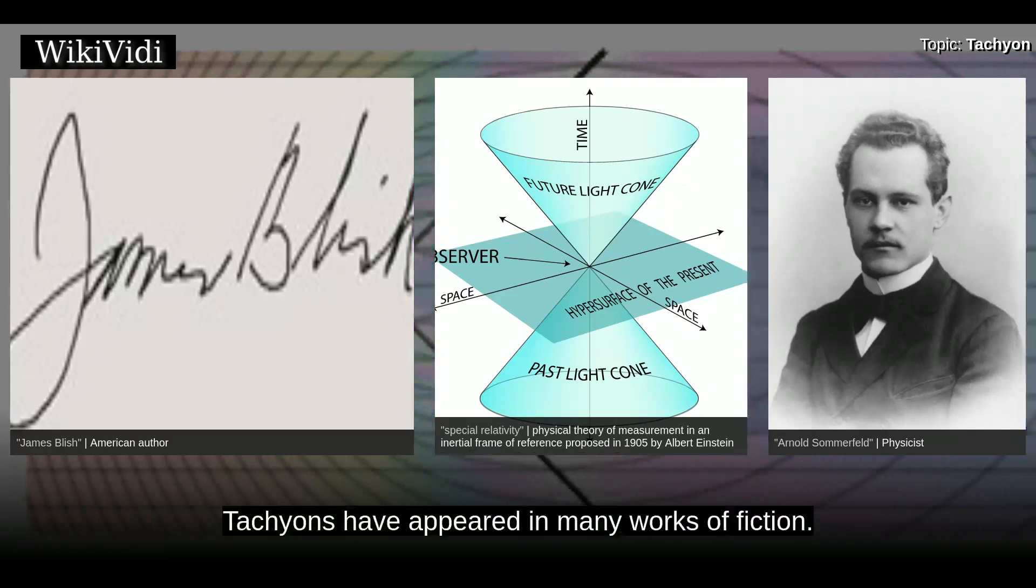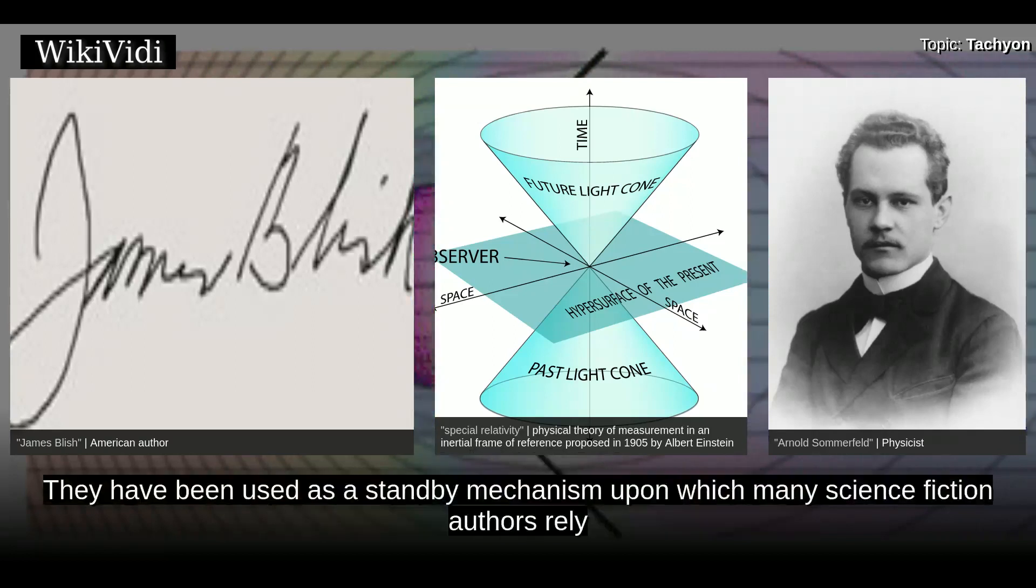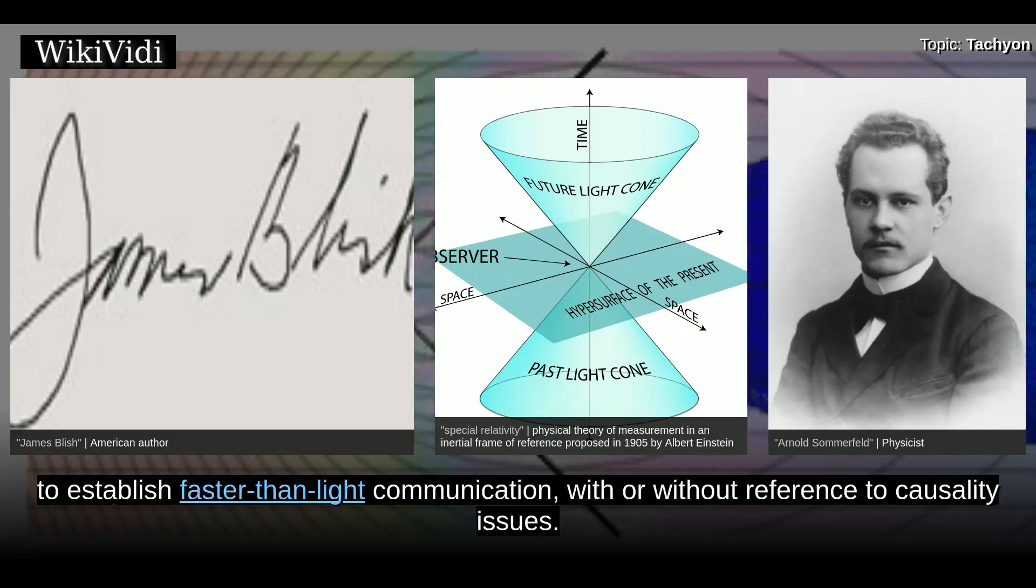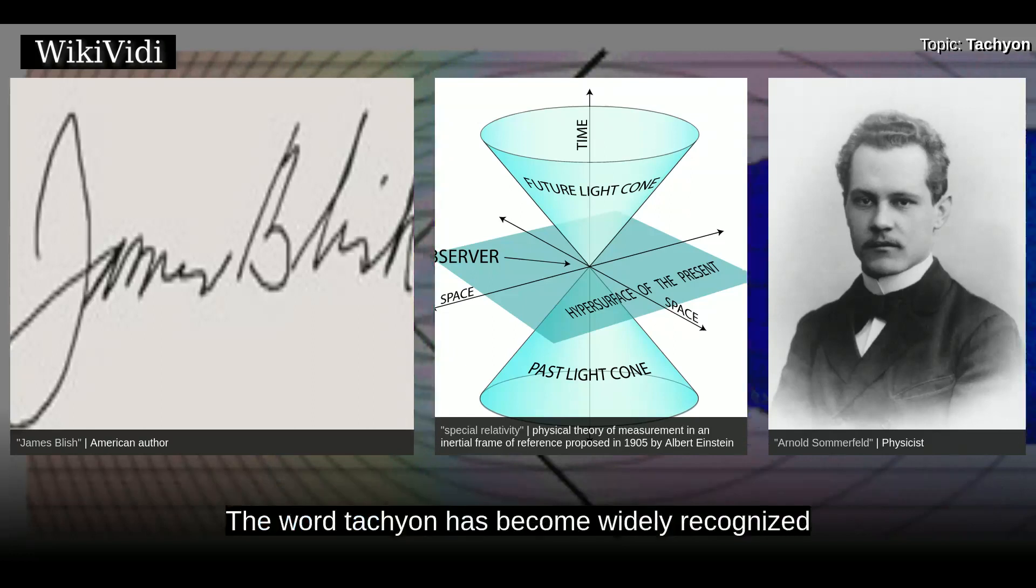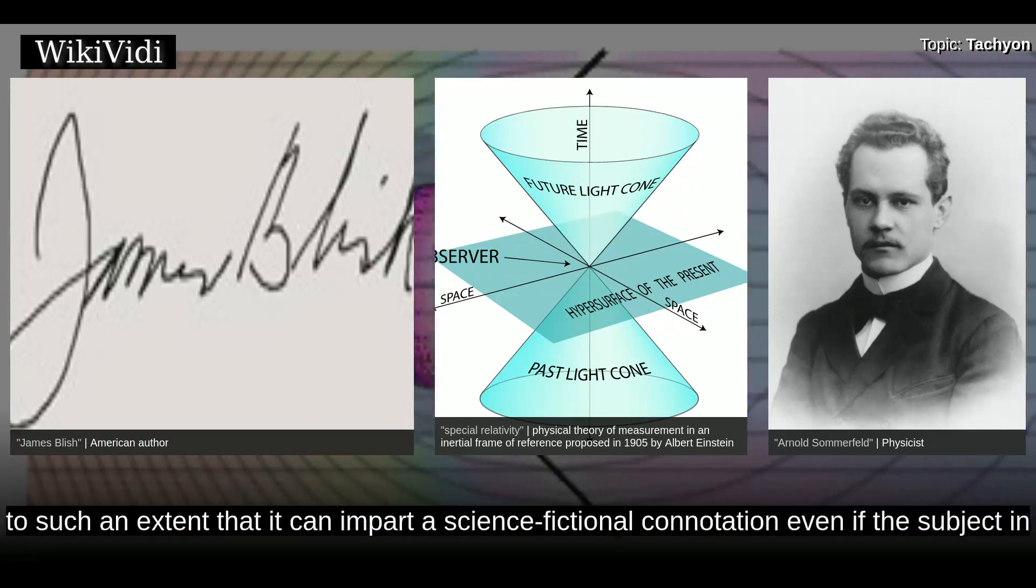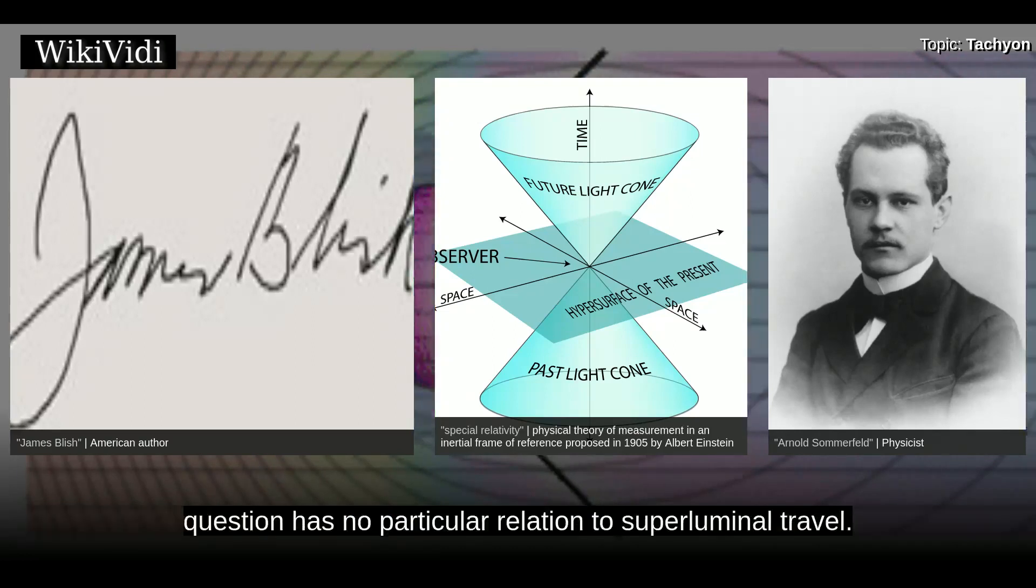In fiction, tachyons have appeared in many works of fiction. They have been used as a standby mechanism upon which many science fiction authors rely to establish faster-than-light communication, with or without reference to causality issues. The word tachyon has become widely recognized to such an extent that it can impart a science-fictional connotation even if the subject in question has no particular relation to superluminal travel.